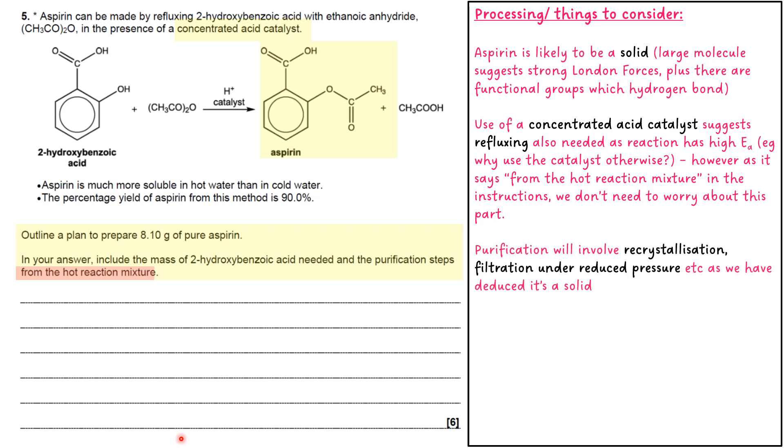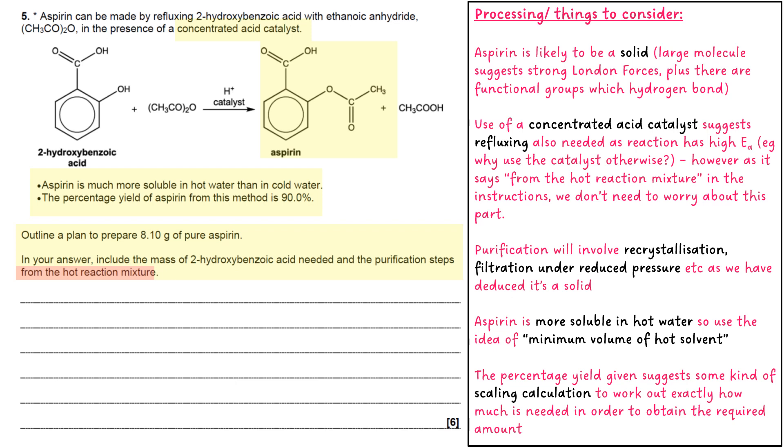Like we've already worked out, it's a solid. So the purification steps will involve things like recrystallization, filtration under reduced pressure, etc. It also says that aspirin is much more soluble in hot water than in cold, which suggests the idea of using the minimum volume of hot solvent, which again leans towards the purification steps we take for solids. And finally, the percentage yield of 90% suggests that some kind of scaling calculation is needed to work out exactly how much 2-hydroxybenzoic acid is required in order to make your 8.1 grams of pure aspirin.